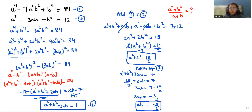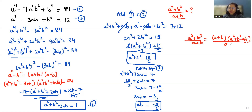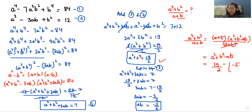Now we have to find the value of a cubed plus b cubed divided by a plus b. The formula of a cubed plus b cubed is a plus b times a squared plus b squared minus ab, divided by a plus b. We can cancel out a plus b, so a squared plus b squared minus ab is left. The value of a squared plus b squared is 19 by 2, and ab is minus 5 by 6.